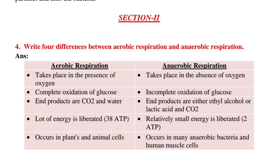Section 2, Question number 4: Write 4 differences between aerobic respiration and anaerobic respiration. Answer — Aerobic respiration: takes place in the presence of oxygen; complete oxidation of glucose; end products are CO2 and water; lot of energy is liberated (38 ATP); occurs in plants and animal cells. Anaerobic respiration: takes place in the absence of oxygen; incomplete oxidation of glucose; end products are either ethyl alcohol or lactic acid and CO2; relatively small energy is liberated (2 ATP); occurs in many anaerobic bacteria and human muscle cells.